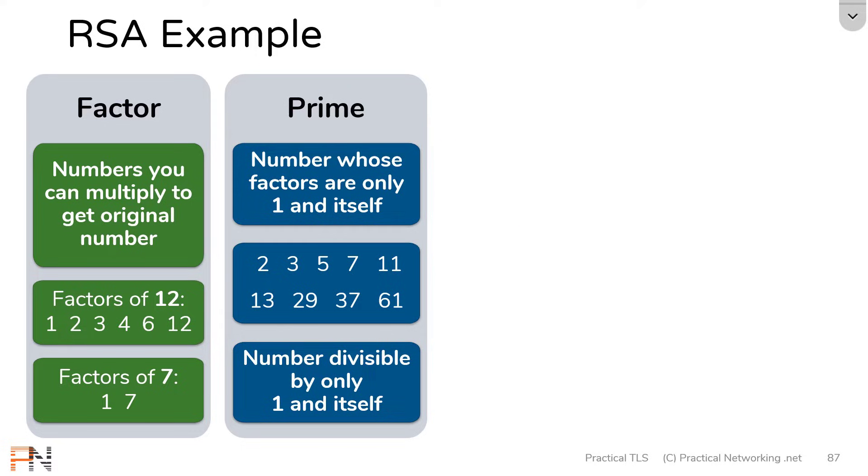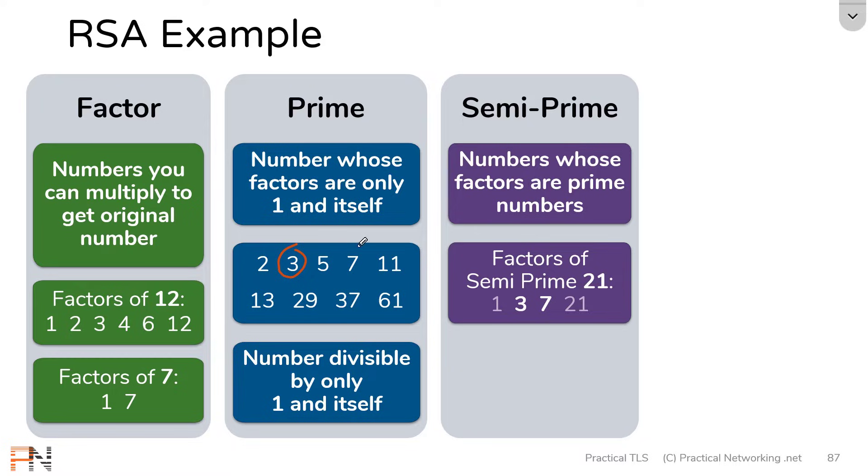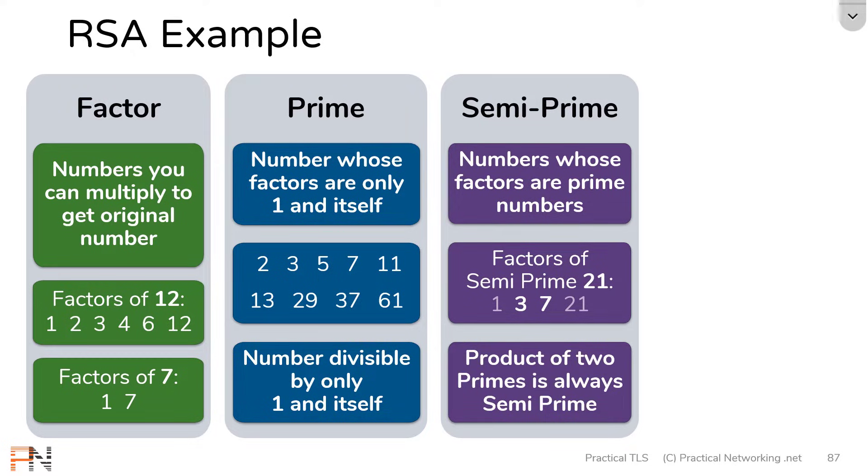The next math term we want to discuss is what's known as a semi-prime number. A semi-prime number is a number whose factors are prime. For example, 21 is a semi-prime number, and the factors of 21 are 1, 3, 7, and 21. Every number is always divisible by 1 and itself, so we can ignore those. The only remaining factors of 21 are 3 and 7, and you'll notice those are both prime numbers. That's what makes 21 a semi-prime number. Here's a hint: anytime you multiply two prime numbers, the result is always semi-prime. So I can multiply 3 and 7 to get 21, and 21 is semi-prime. I could have also multiplied 5 and 11 to get 55, and 55 is a semi-prime number.